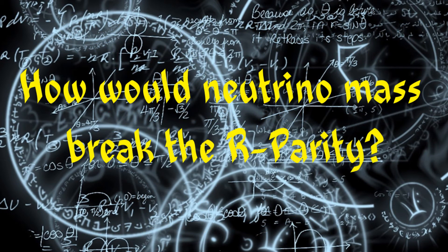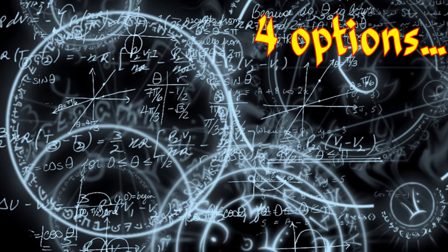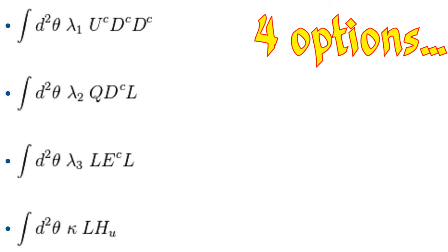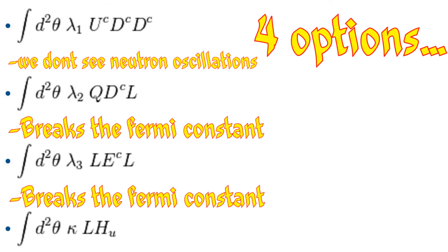So how would neutrino mass break the R-parity if one of these seesaw models turns out to be wrong? There are four different options that all seem to explain it at first glance, but they break other physical parameters. One breaks the fact that we don't observe neutron and anti-neutron oscillations. Two break the Fermi constant, and the last leads to large neutrino masses.